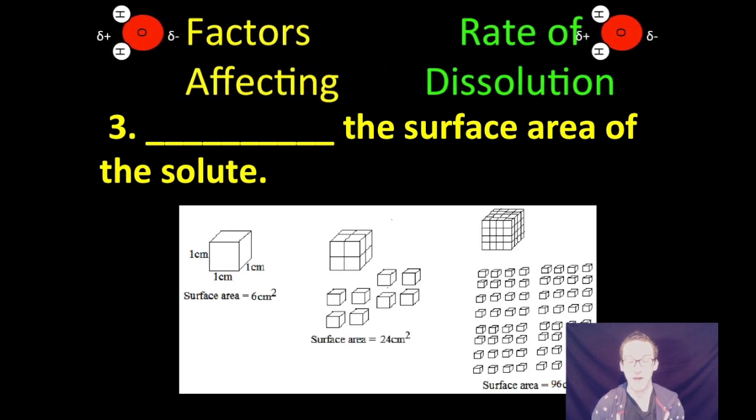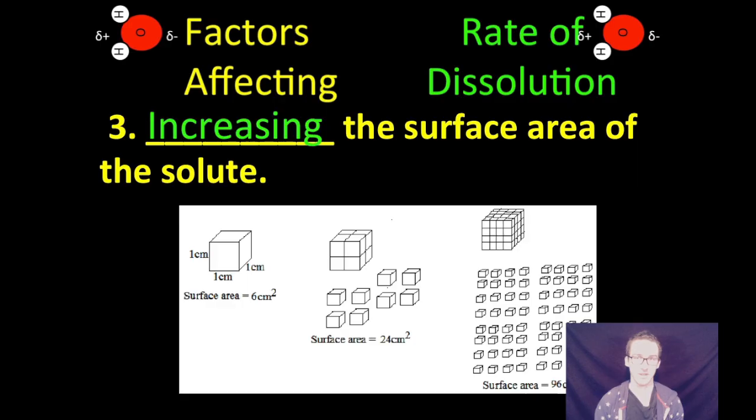Again, as you think about how fast or how slow you can get something to dissolve, it's all about the interactions between your solute and your solvent particles. And by increasing the surface area—usually we can do that by crushing things down, turning them into a powder—in some way exposing more area for your solvent molecules to begin dissolving those solute particles. That will increase the rate of dissolution.